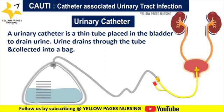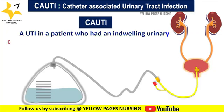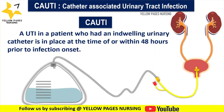What do we mean by CAUTI? A CAUTI is a UTI in a patient who had an indwelling urinary catheter in place at the time of, or within 48 hours prior to, infection onset. Remember, there is no minimum period of time that the catheter must be in place in order for the UTI to be considered catheter-associated.